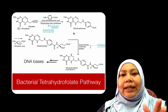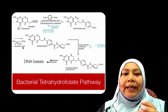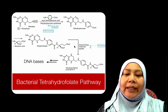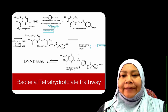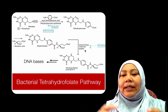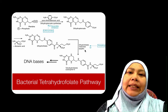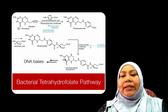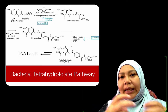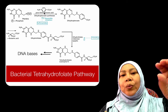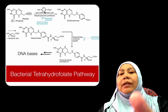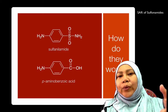Once dihydropteroate is formed, it combines with L-glutamic acid to form dihydrofolate. This is then catalyzed by dihydrofolate reductase to form tetrahydrofolate. This dihydrofolate reductase is further inhibited by trimethoprim, which we'll see later. Once tetrahydrofolate is formed, it will be the building block for bacterial DNA. Sulfonamide effectively inhibits this step in the bacterial tetrahydrofolate biosynthesis.